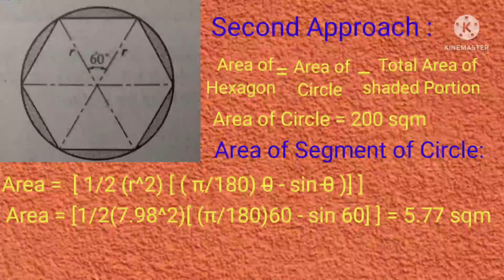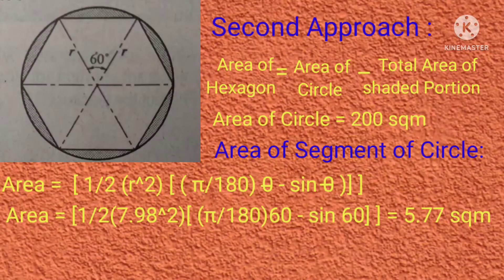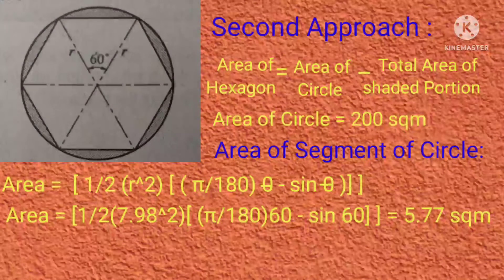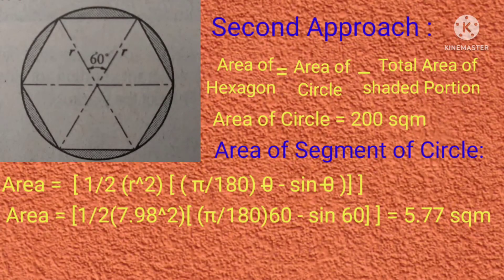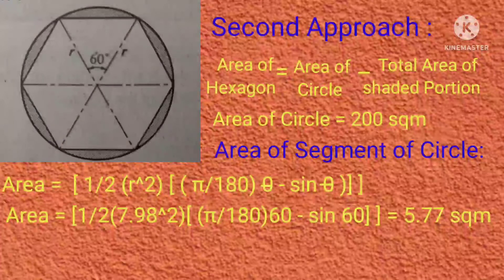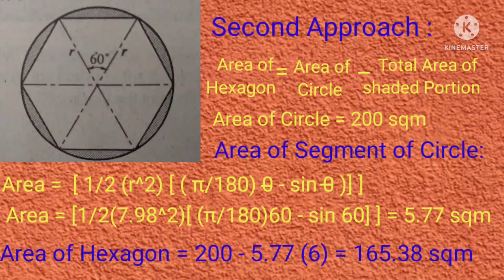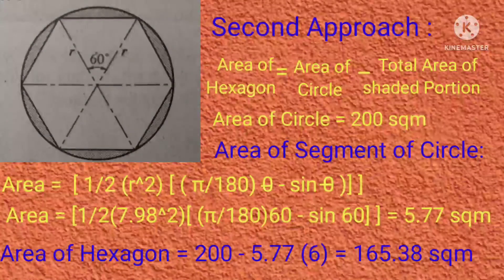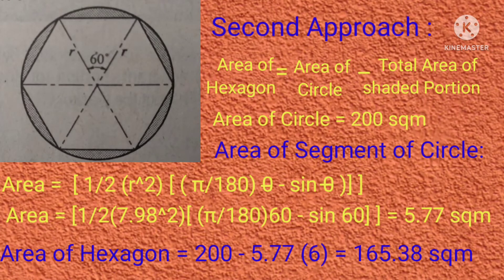We get an area of one shaded segment equal to 5.77 square meters. Multiplying by 6 gives a total shaded area of 34.62 square meters. The area of the hexagon is then: Area = Area of circle − Total shaded area = 200 − 34.62 = 165.38 square meters.